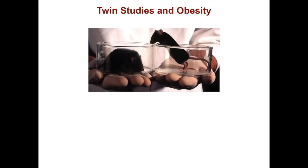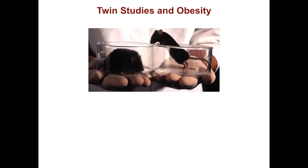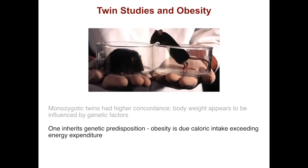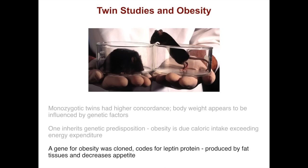For example, looking at obesity — here you can see a chunky mouse and a very lean mouse. In humans, monozygotic twins had a higher concordance of their body mass index. Therefore, body weight appears to be influenced by genetic factors. A person only inherits a genetic predisposition for obesity, since obesity is due to caloric intake exceeding energy expenditure — basically eating more than you burn. A gene for obesity has been cloned and codes for the leptin protein, which is produced by fat tissues and works to decrease appetite. There are many people working on leptin as a potential tool to regulate appetite and reduce obesity.